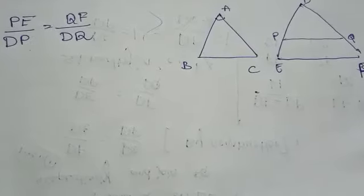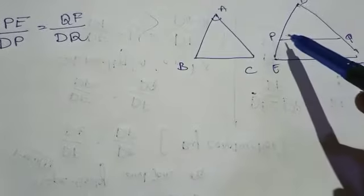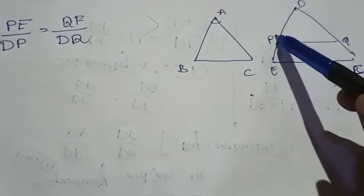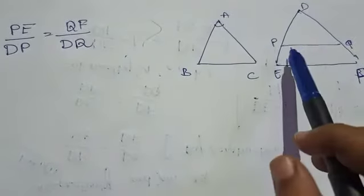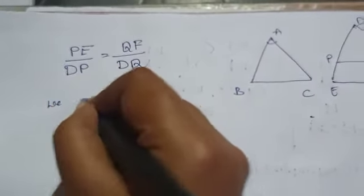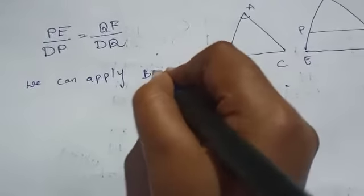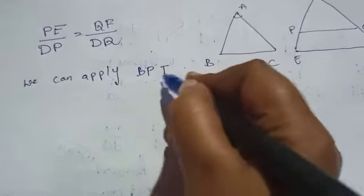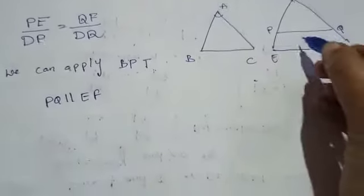We can apply the converse of the Basic Proportionality Theorem (BPT). According to the converse of BPT, if one line divides any two sides of a triangle in the same ratio, then the line is parallel to the third side. Therefore, PQ is parallel to EF.